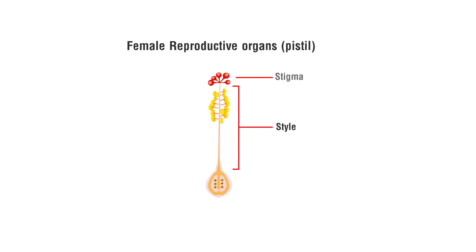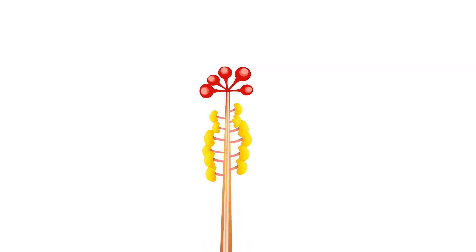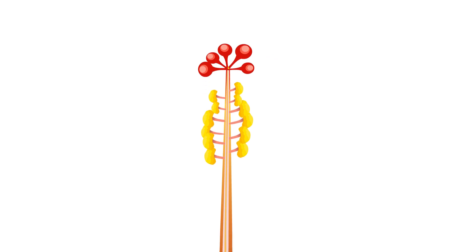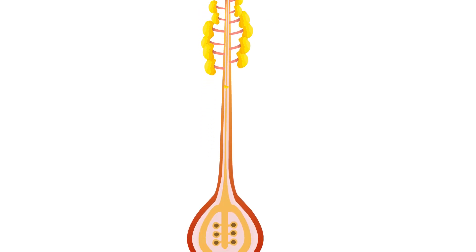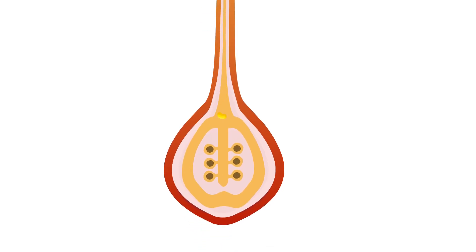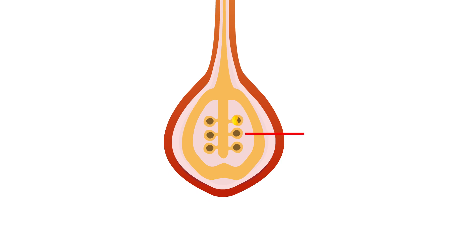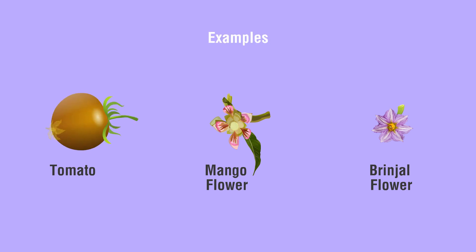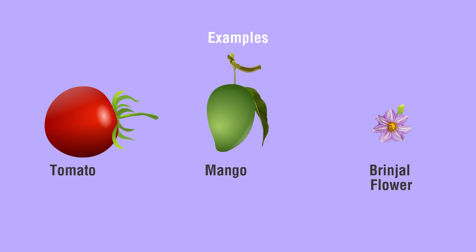Stigma and Style: The stigma is where pollen is collected and it is at the top of the pistil. In the middle is the style — this is the section where the pollen travels down to the ovary. During fertilization, pollen travels down to meet the ovules. In some bisexual flowers, after fertilization, the ovary develops to become fruit and the ovule develops to a seed — for example, in tomato, mango, and brinjal.